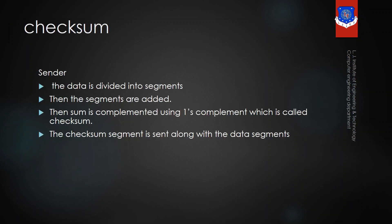In the checksum method, at the sender side, these four steps will be performed. In the first step, the data which is to be sent will be divided into segments. After dividing the data into segments, those segments will be added using binary addition. After performing the binary addition, the answer will be complemented using the one's complement. And the checksum segment and the data segment will be sent together to the receiver.